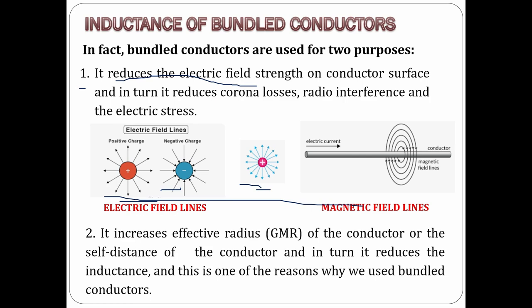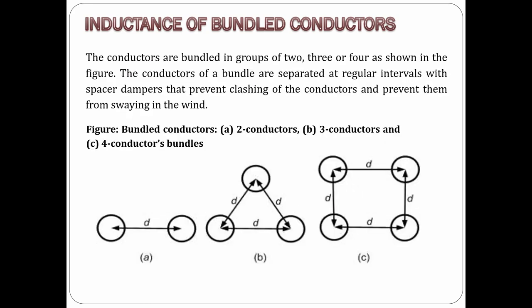Number two: bundled conductors increase the effective radius, or self-distance, of the conductor, and in turn reduce the inductance. This is one of the reasons why we use bundled conductors. Now let us look at the different configurations of bundled conductors.